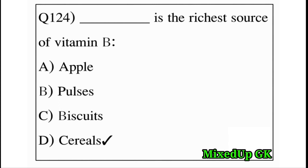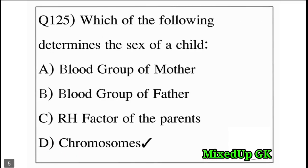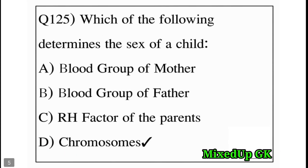Next question: what is the richest source of vitamin B? Option A: apple, Option B: pulse, Option C: biscuits, Option D: cereals. The answer is Option D: cereals. Cereals are the richest source of vitamin B.